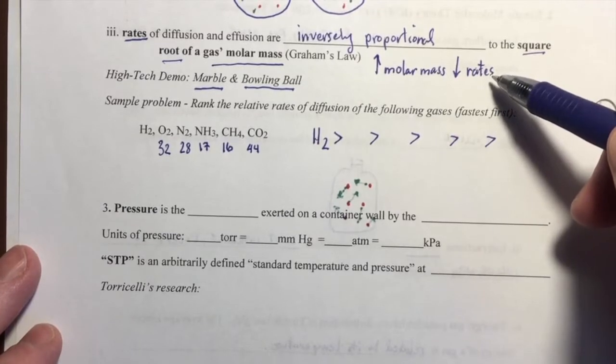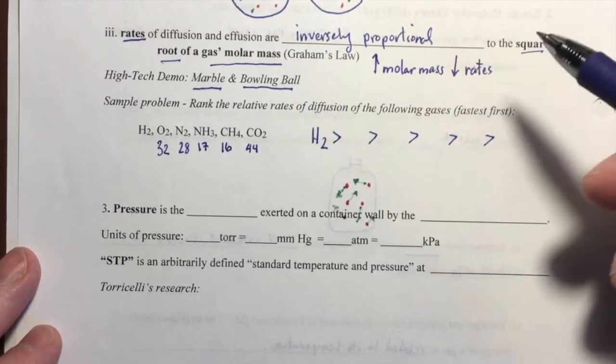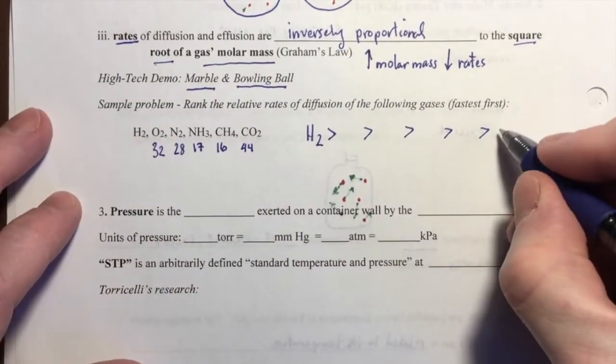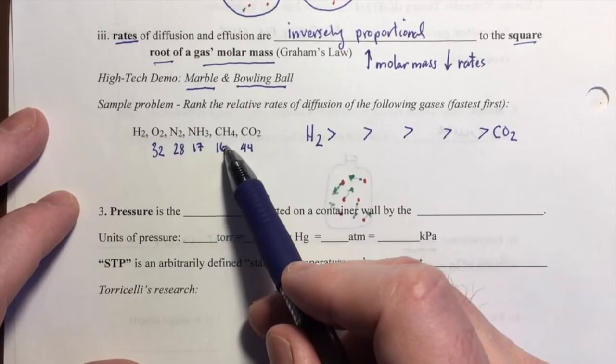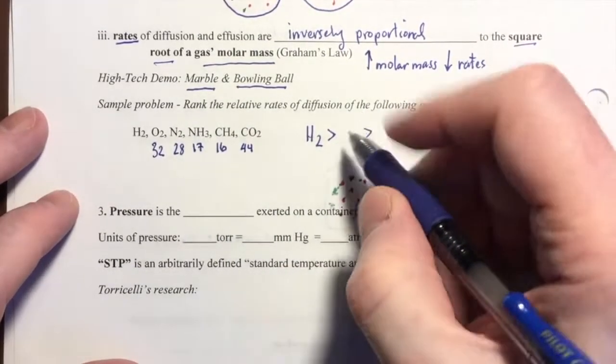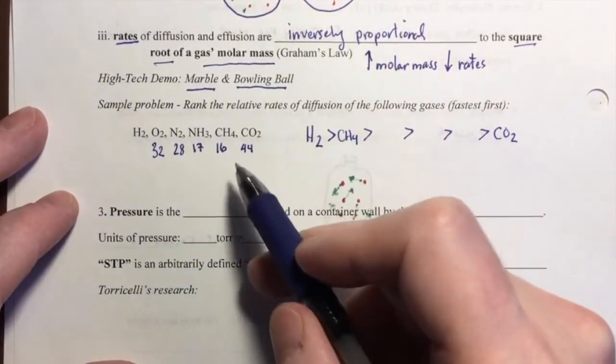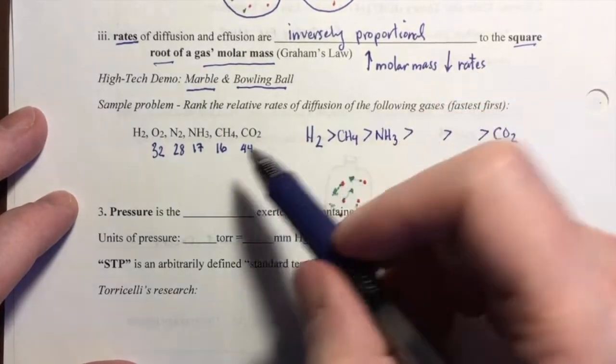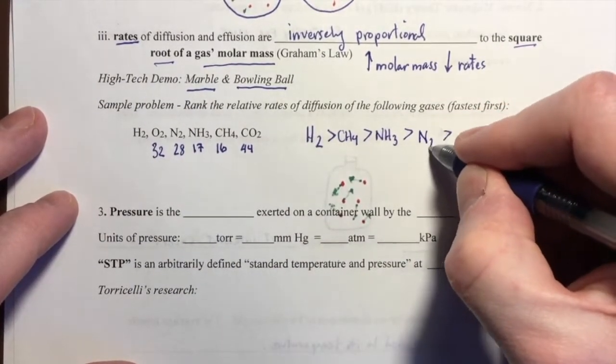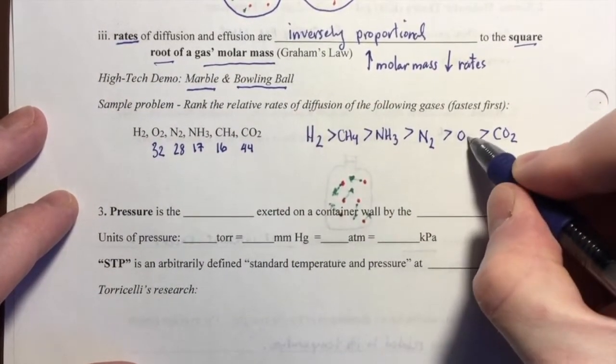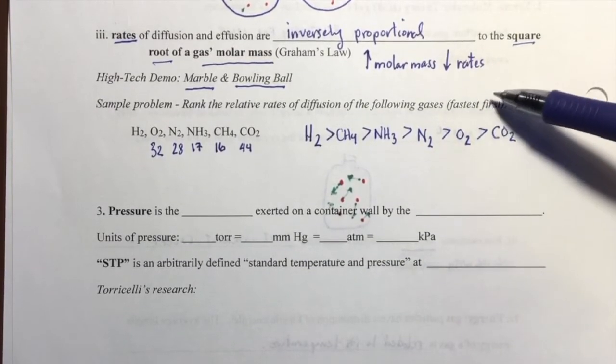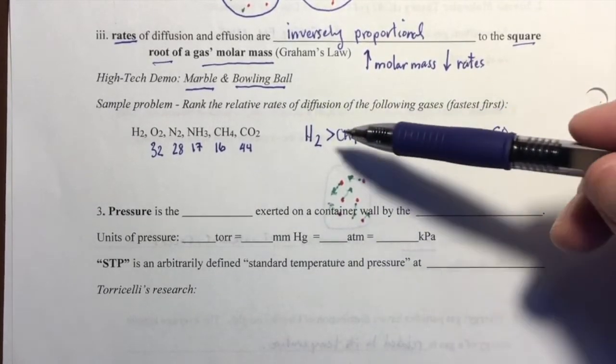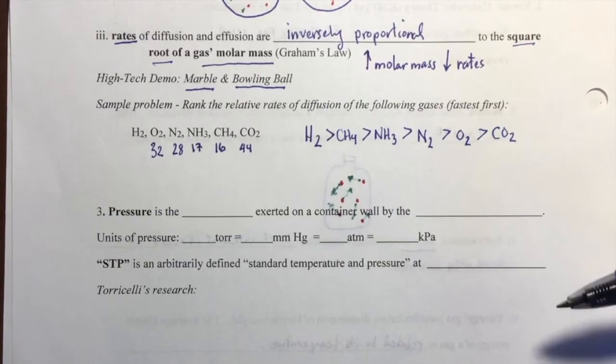Now that I know their approximate molar masses, I can determine their relative rates. The higher their molar mass, the slower their rate. So the highest molar mass is CO2. That's going to be the absolute slowest. What's going to come after H2? Well, the lowest molar mass traveling fastest, other than H2, is going to be CH4. Next would be NH3. Next would be N2. Next would be O2. And there we go. I've ranked the relative rates of diffusion, which would also be the relative rates of effusion, wouldn't it? Starting from fastest first and going to the slowest, which is another way of saying starting from the lightest and going to the heaviest, because there's an inverse relationship there.